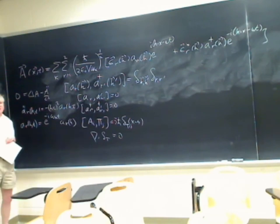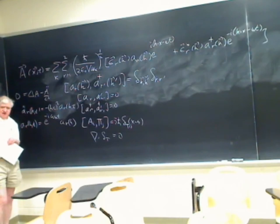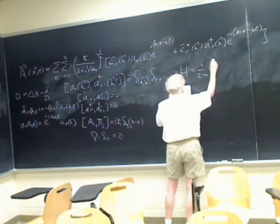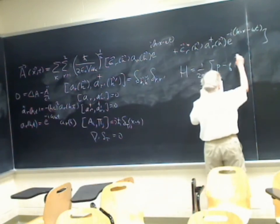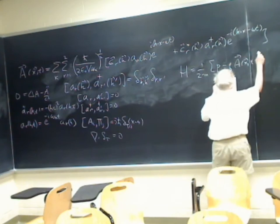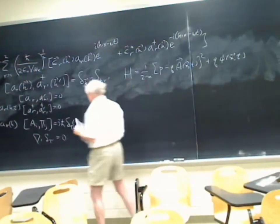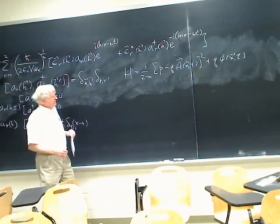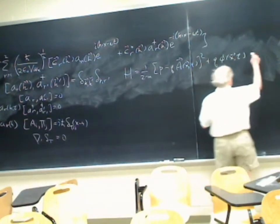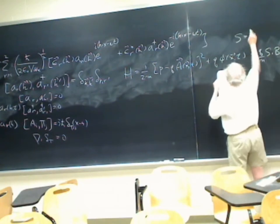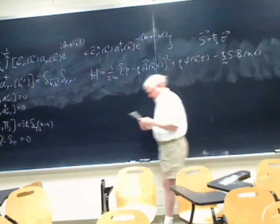Weeks ago, before we started perturbation theory, I discussed the charged particle in an electromagnetic field. The Hamiltonian is (1/2m)(p − qA)² + qφ, and if we add spin: minus (q/m) S·B(x). Here x is the particle's position, which also appears as the argument of the field.